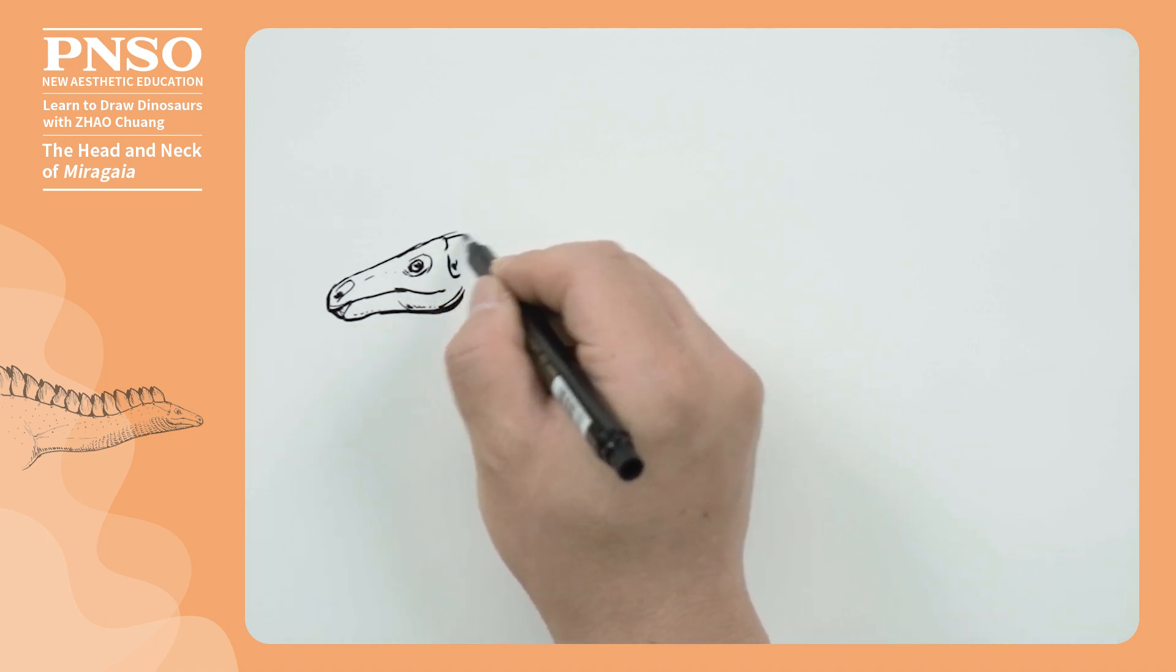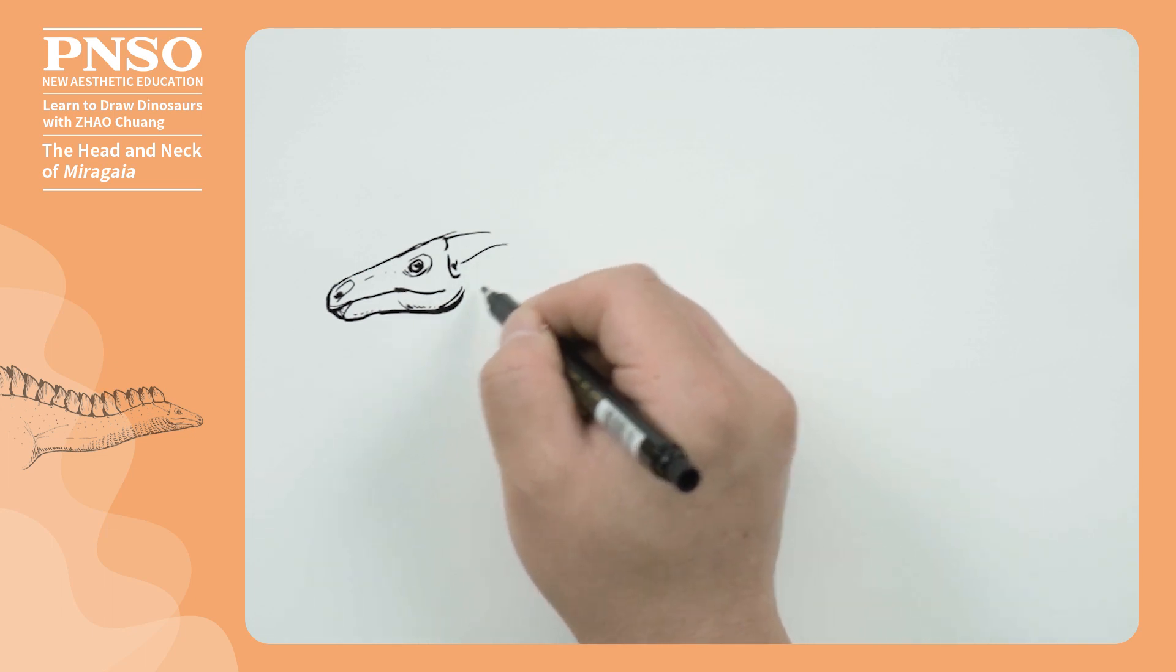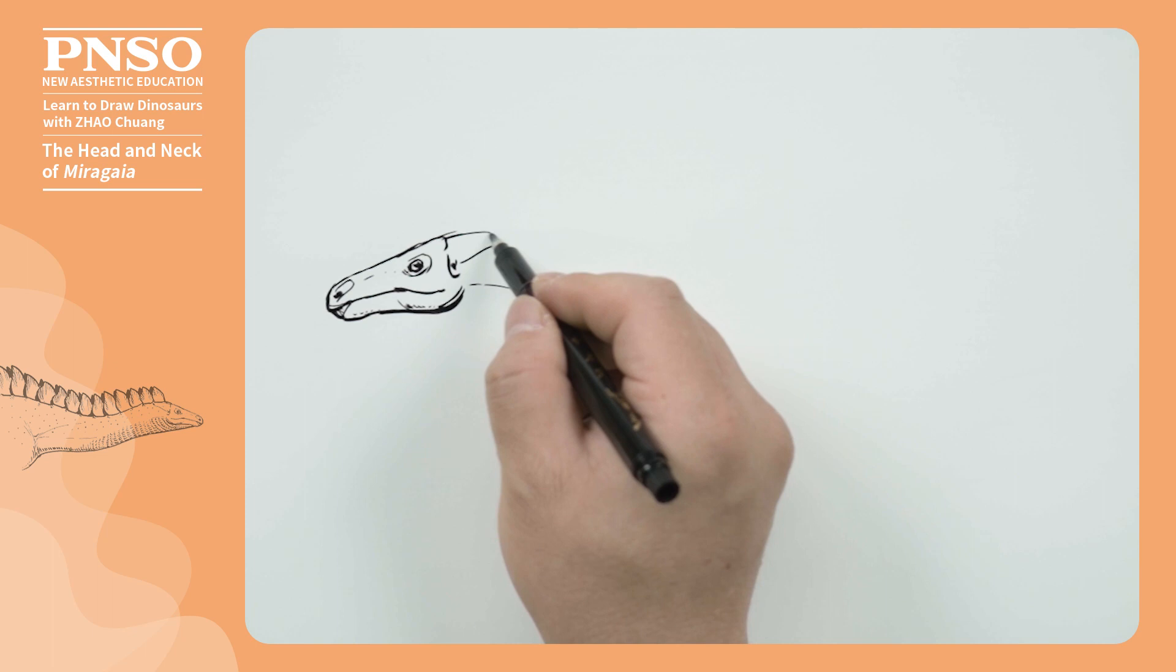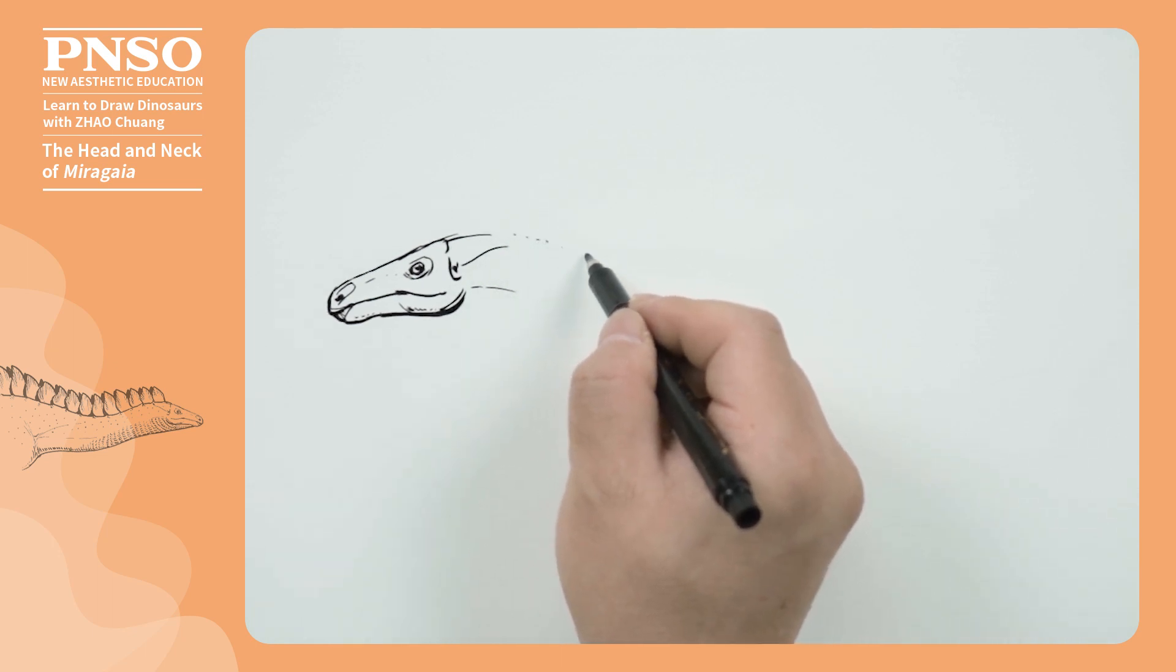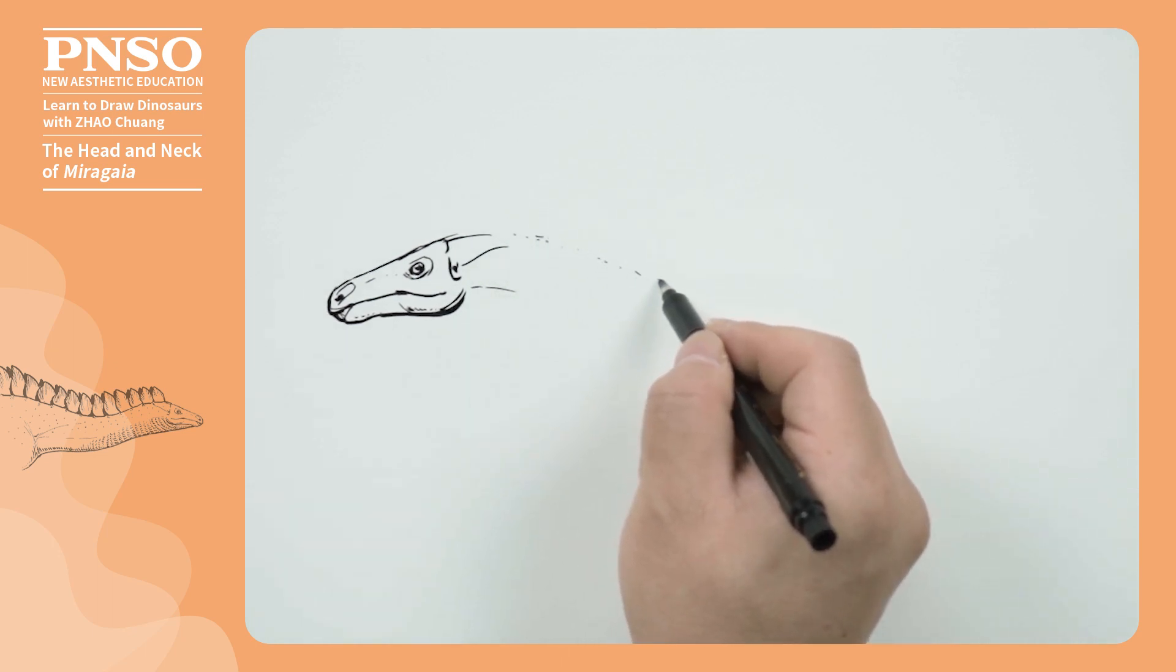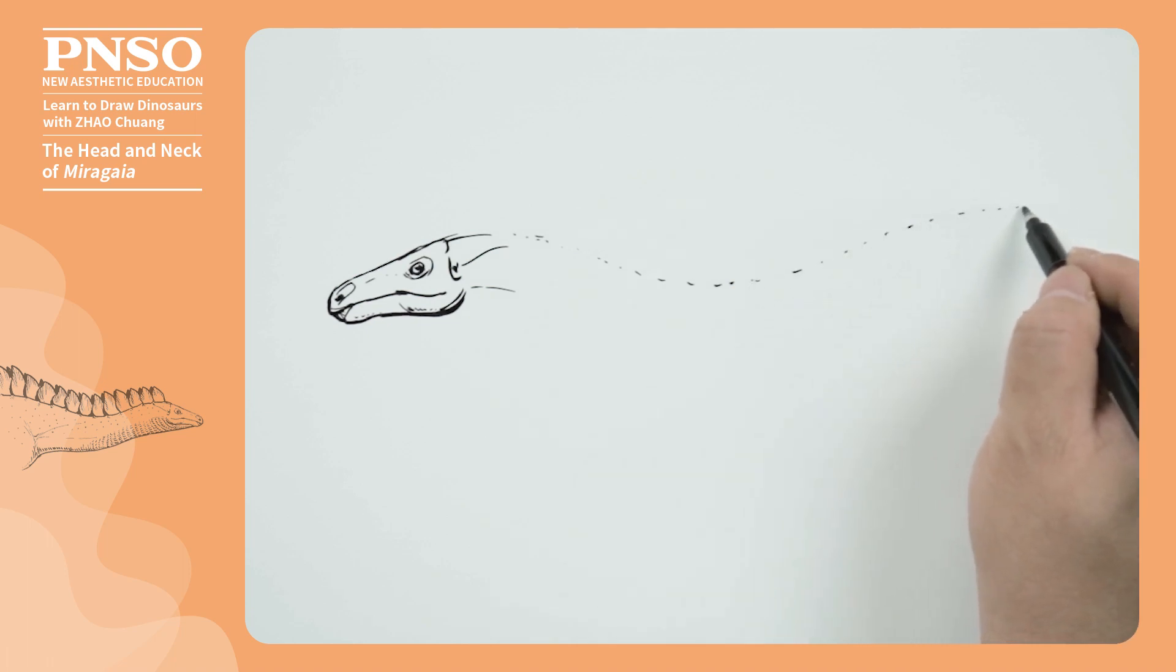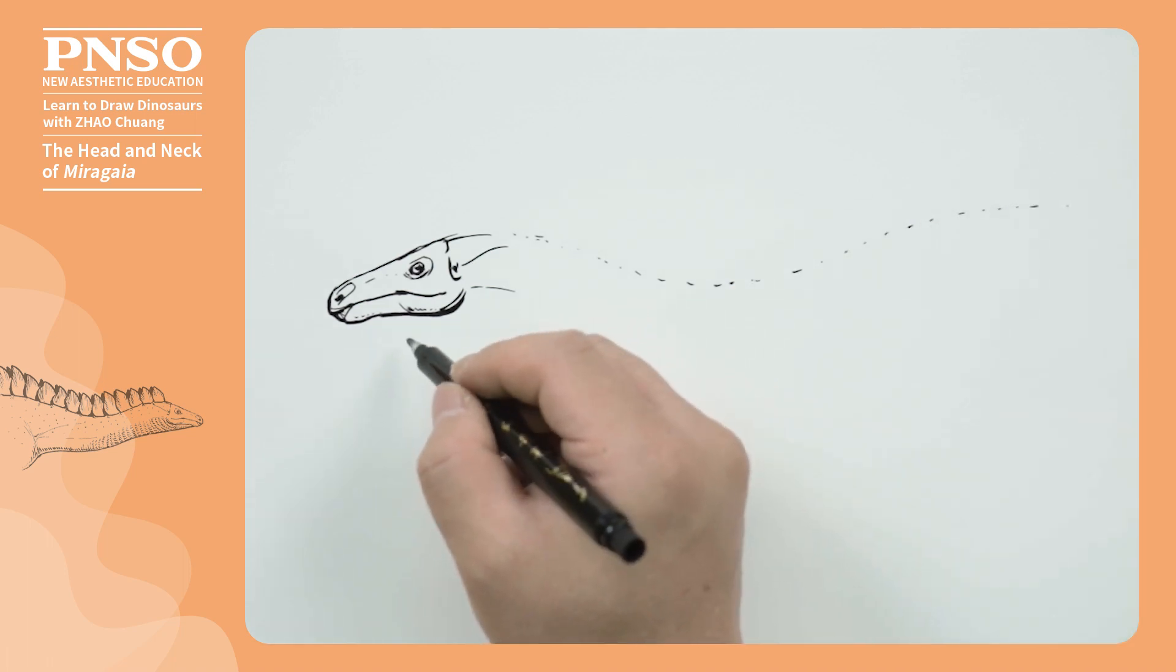Next, let's draw the muscles on the back of its head, and then use dotted lines to show its long neck. Its back had many bony plates on the dorsal side. Using dotted lines will make it easier to draw the bony plates later.